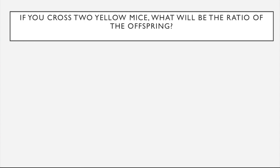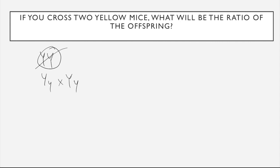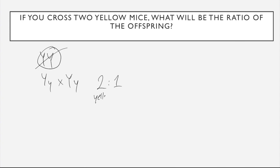Question three: if you cross two yellow mice, what would be the ratio of the offspring? If we were only thinking about color and not lethality, the two options for yellow color would be big Y big Y or big Y little y. However, we know the homozygous big Y big Y genotype results in organism death, so that's not an option. So we would have two heterozygotes for the parentals — a monohybrid cross — giving us a 2 to 1 ratio of yellow to non-yellow.